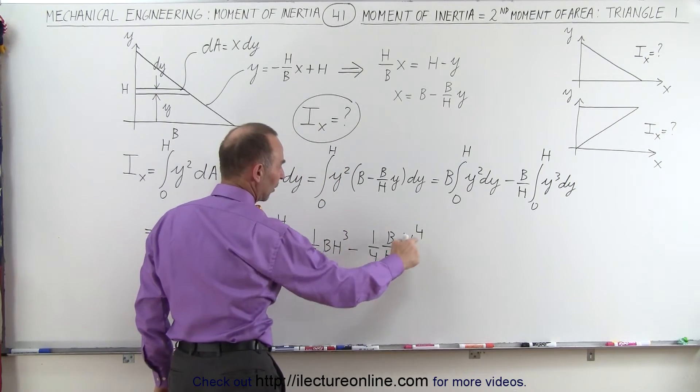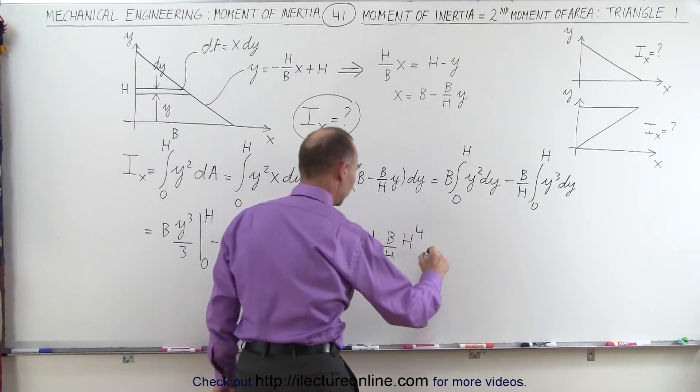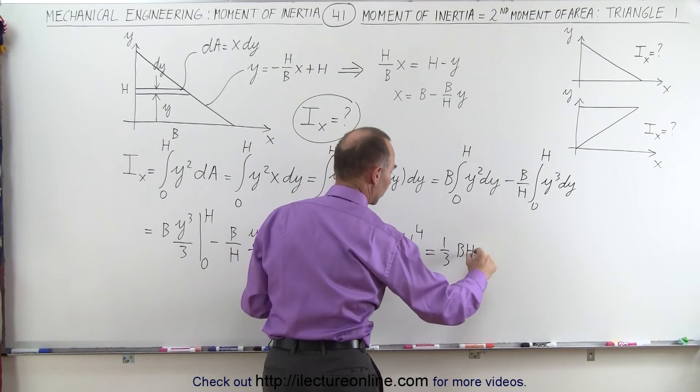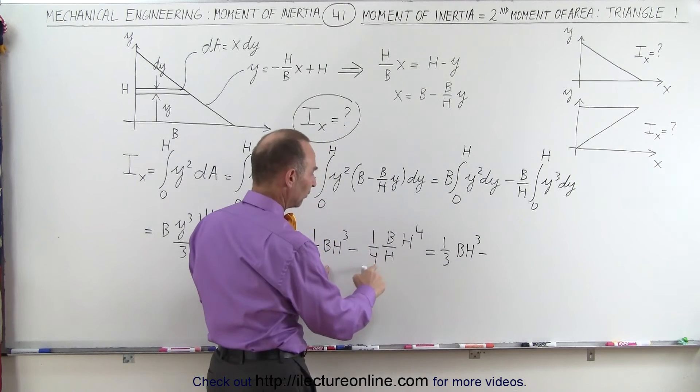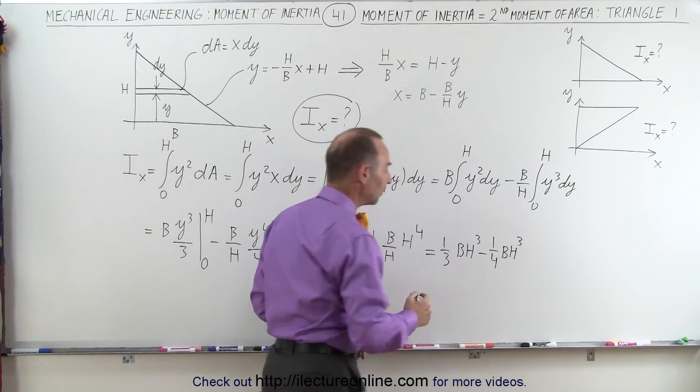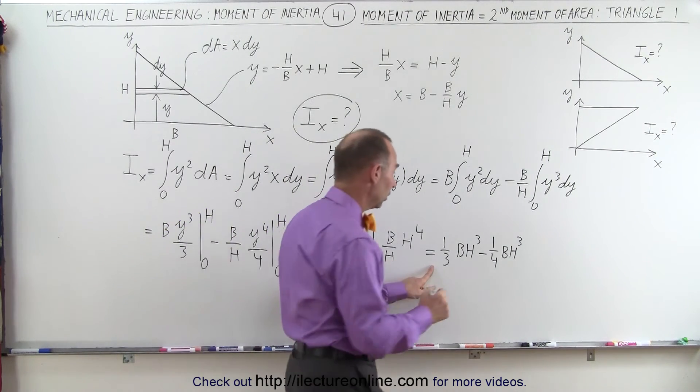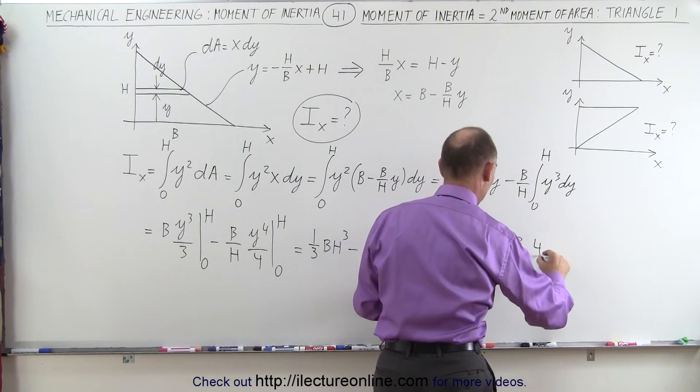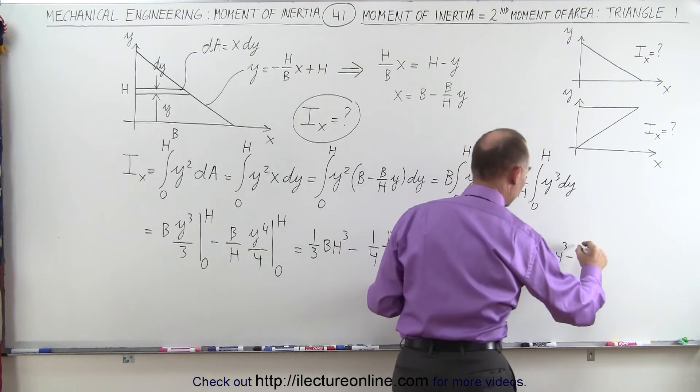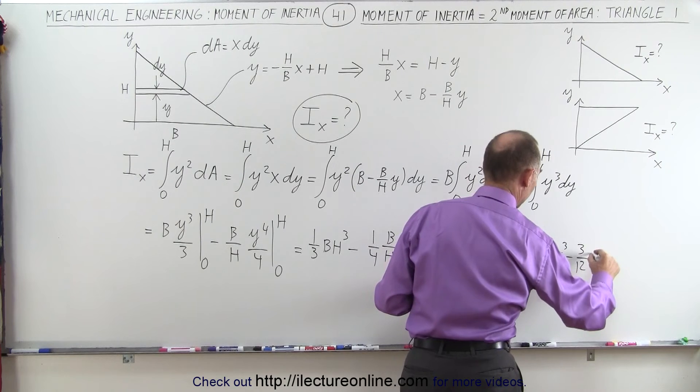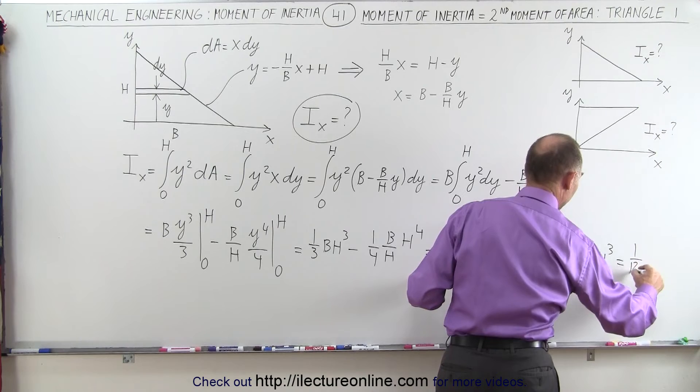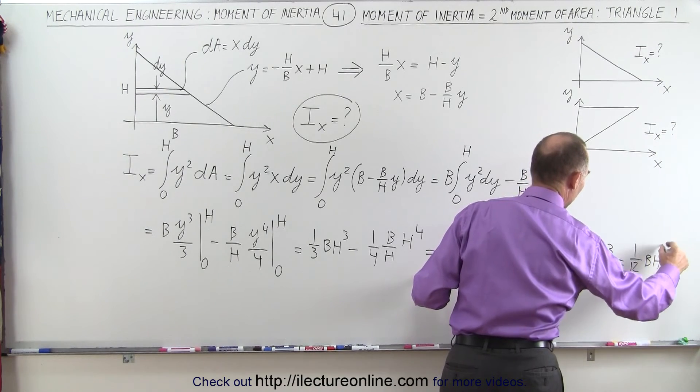And you can see that this h will cancel out one of those. So this ends up being 1 3rd b h cubed minus 1 4th b h cubed. Common denominator would be 12. That gives us 4. So this would be equal to 4 over 12 b h cubed minus 3 over 12 b h cubed, which is equal to 1 12th b h cubed.